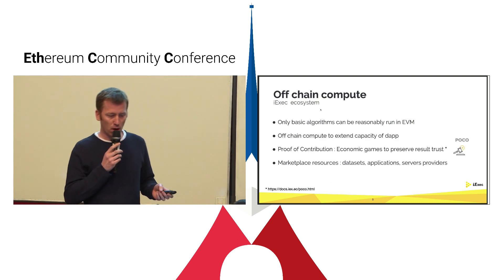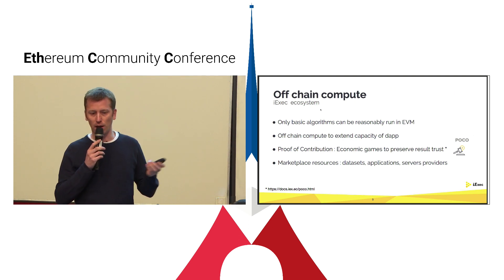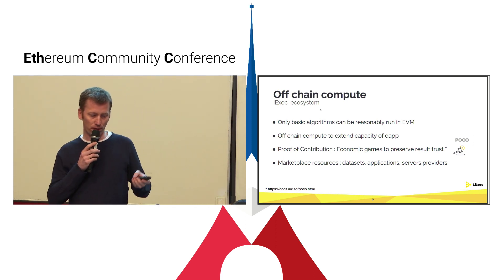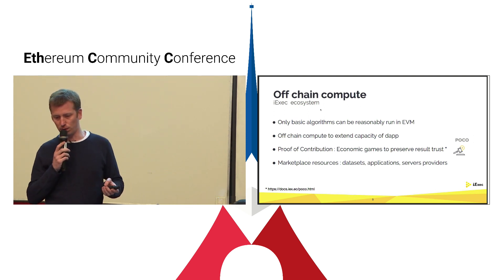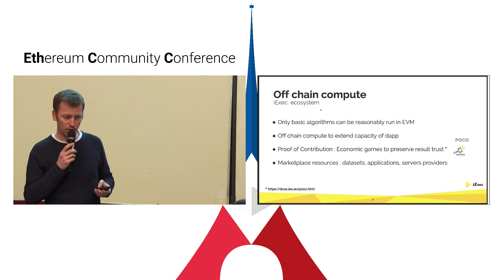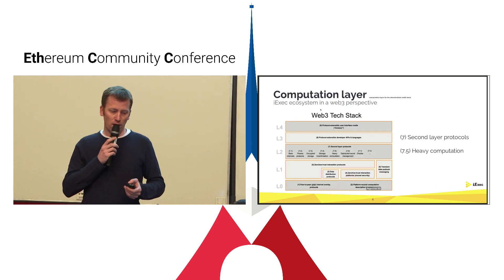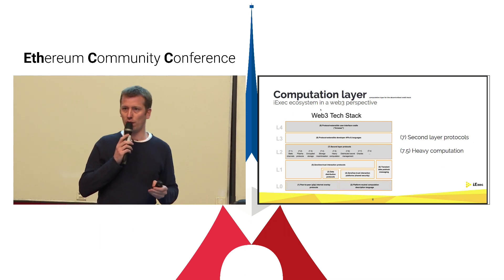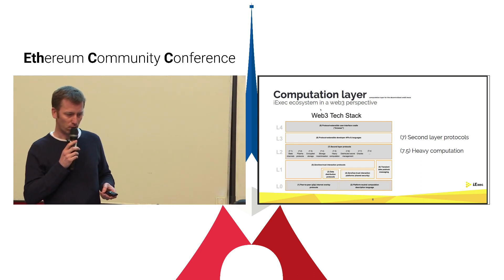To sum up: with off-chain compute you can extend your dApp's capacity, and on top of that we add an economic game to preserve trust of the result. We use the blockchain to create this kind of marketplace for dataset, application, and server providers. In a web3 perspective, we are a second-layer protocol focusing on heavy computation, and this is an extract from the web3 stack.